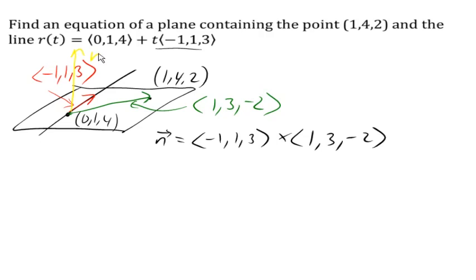And so doing the cross product, we end up with our normal vector, which becomes our coefficients on x, y, and z. Now, to find our value for the constant, we can plug in any of our points here, any of our two points.